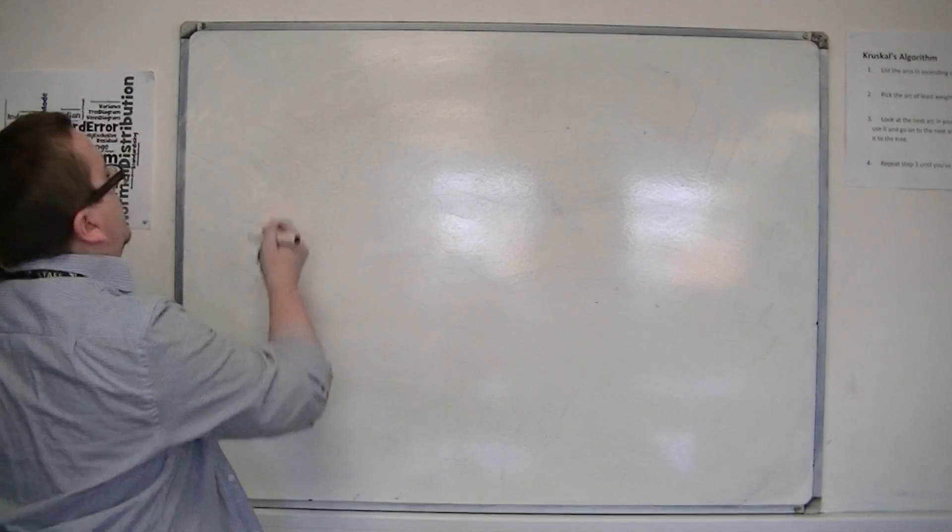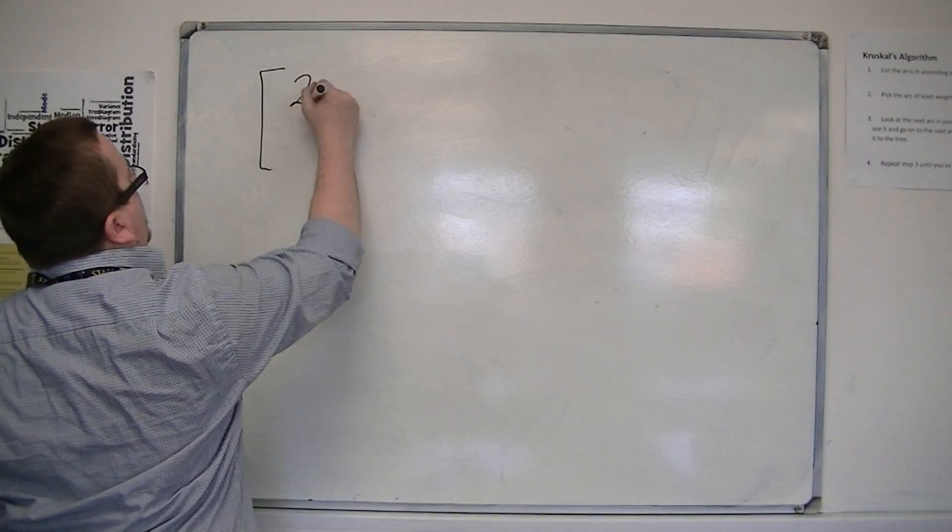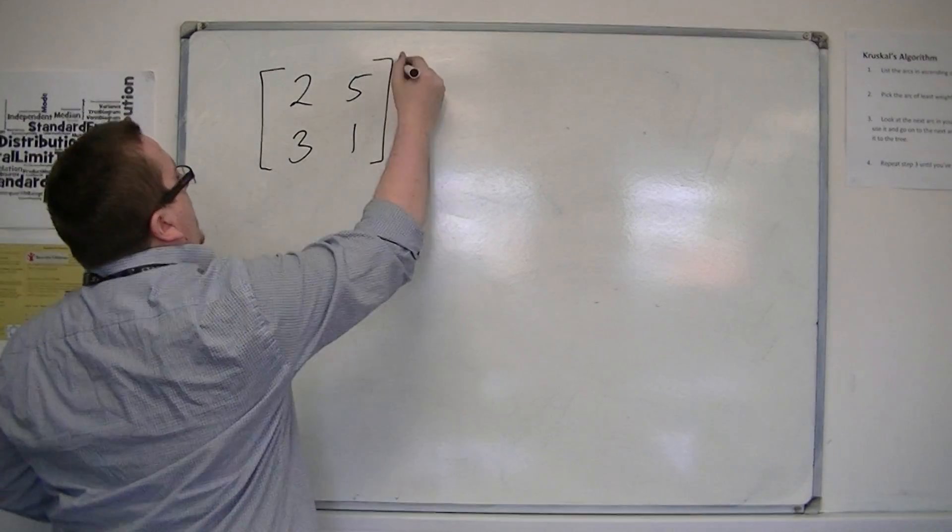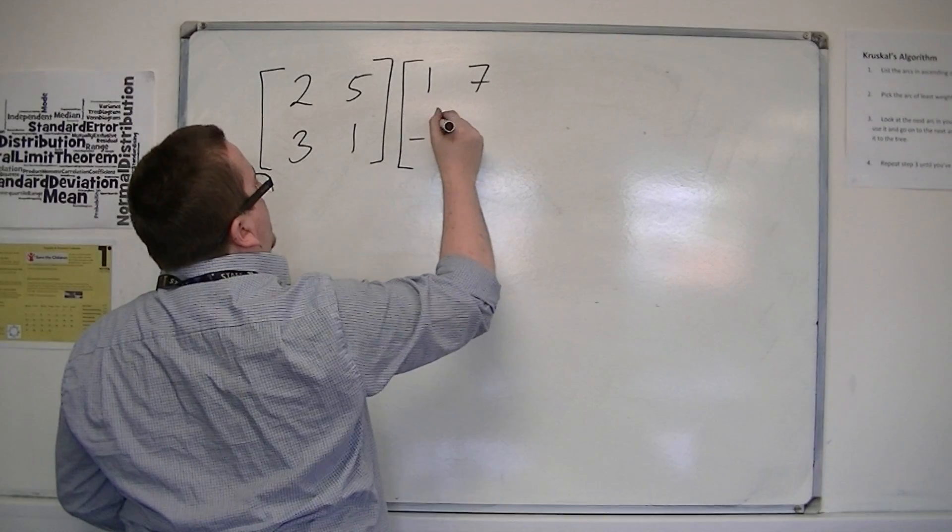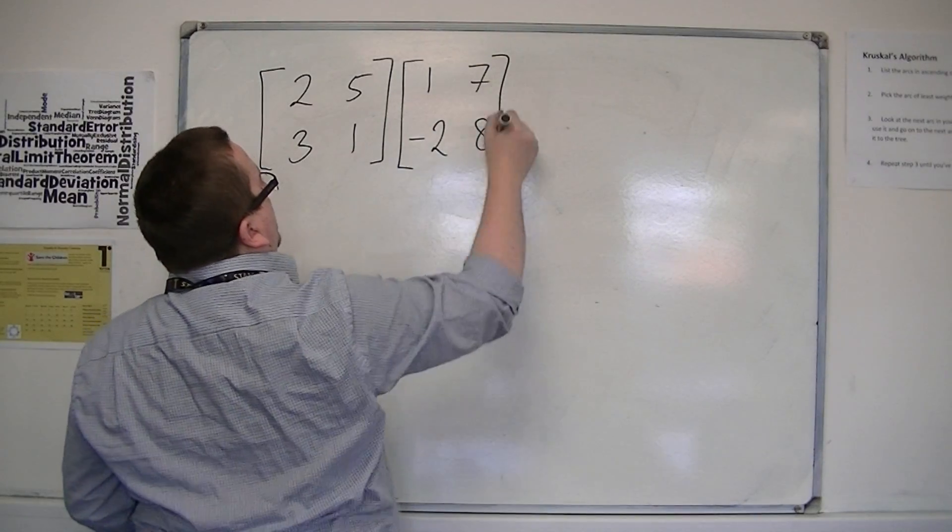So if I have a matrix like 2, 5, 3, 1, and I want to multiply this by 1, 7, minus 2, 8, for example.